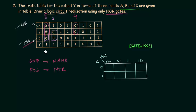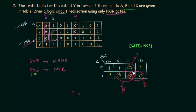Y values are filled into the Kmap: 1,1,1,0 then 1,0,0,0. To find POS form using Kmap we combine zeros. There are three groups of zeros: the first group gives B complement OR A complement, the second group gives C complement OR B complement, and the third group gives C complement OR A complement. So the POS form is F = (B complement OR A complement) AND (C complement OR B complement) AND (C complement OR A complement).